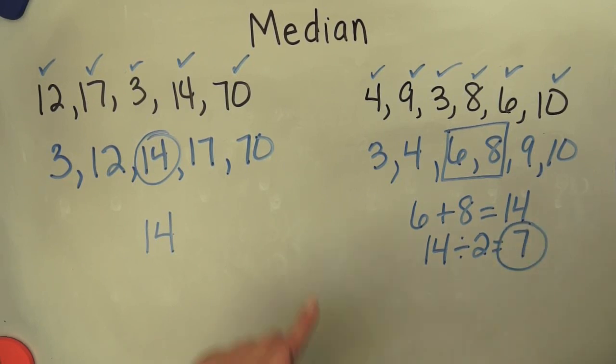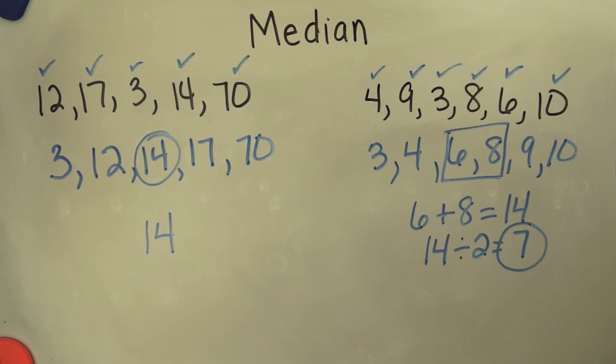So 7 is the median of this set of numbers. And that's the end of this lesson on median.